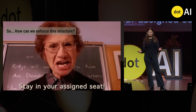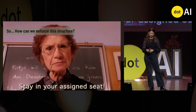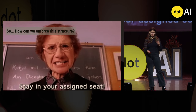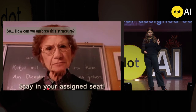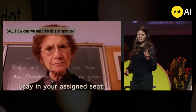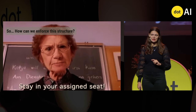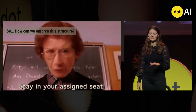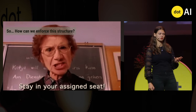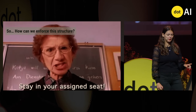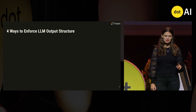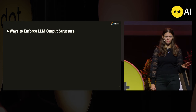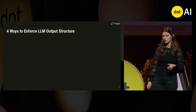So the question is: how can we enforce this structure? We don't need 99% enforcement — we need 100% enforcement. Otherwise it's going to break our pipelines. Today I'm going to talk about four ways to enforce LLM output structure.